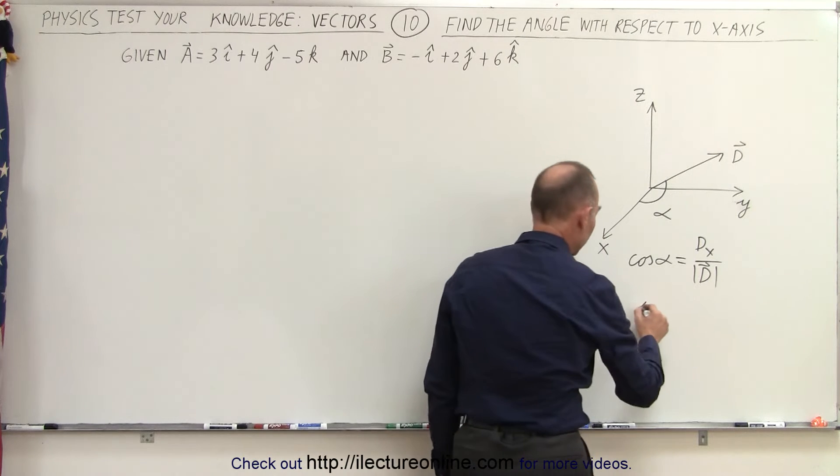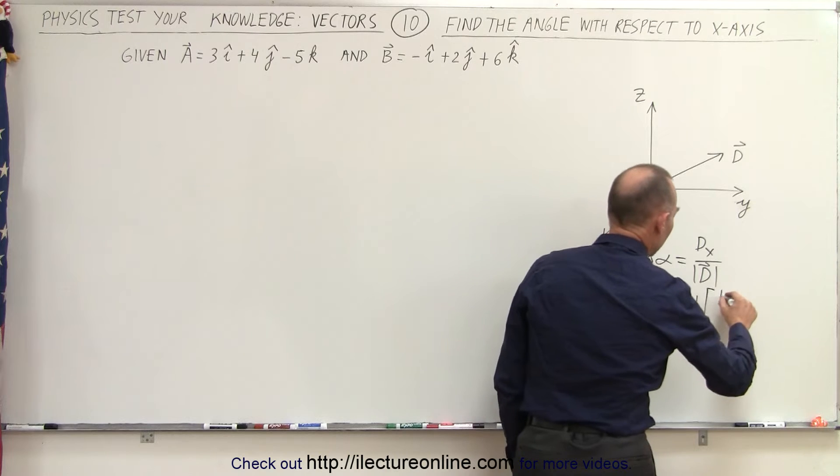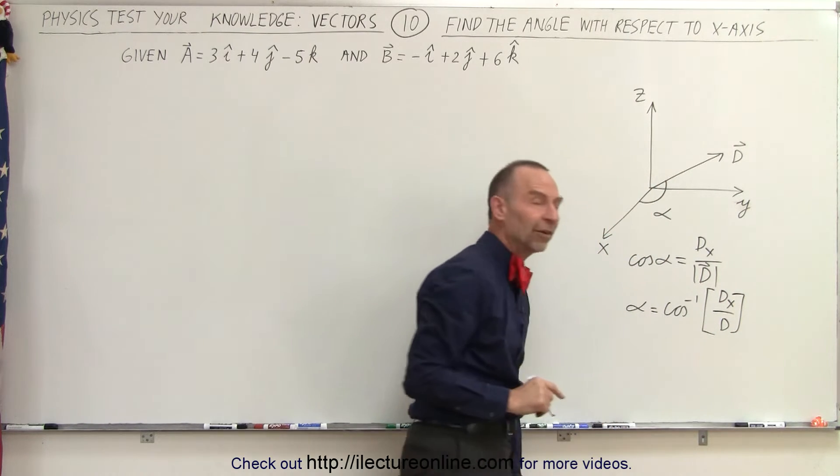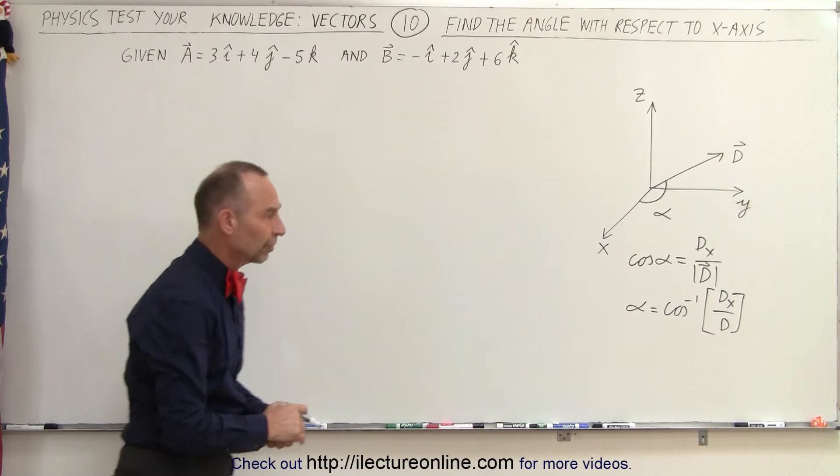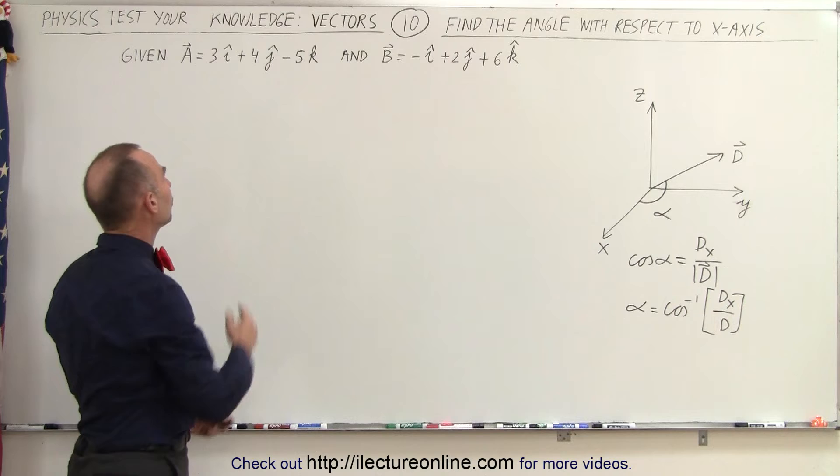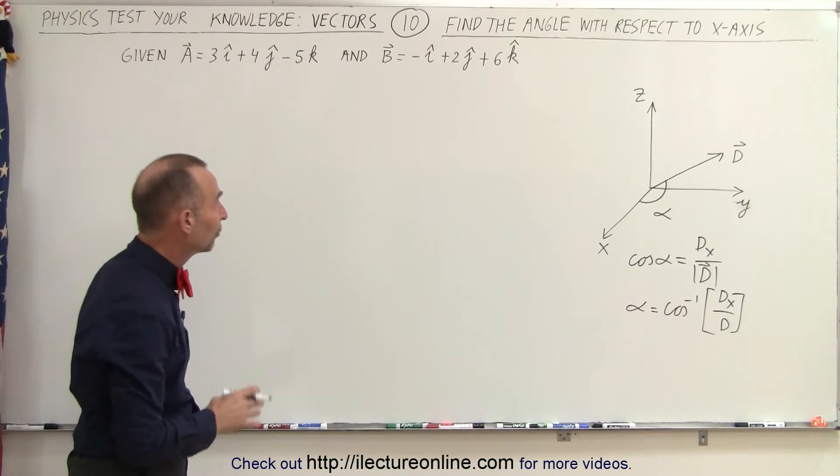Then to find the angle, we take the inverse cosine of that, so d sub x over d, and that's how we find the angle alpha for a particular vector, for any vector for that matter. And so using the same principle, we're going to do that over here. So what we need to do is first find the magnitude of the two vectors.